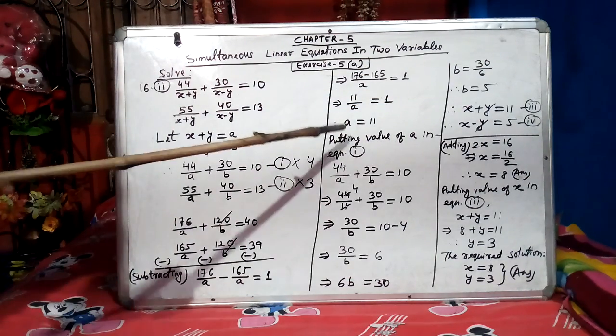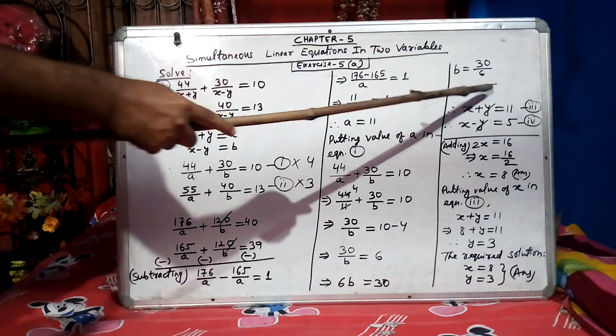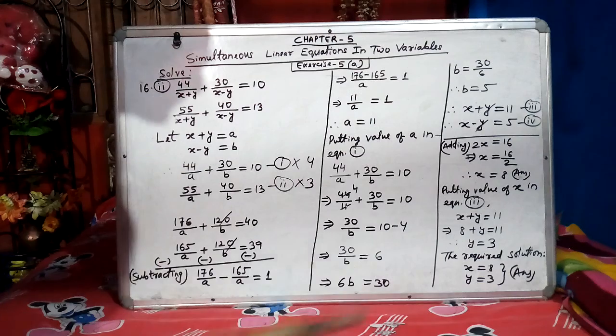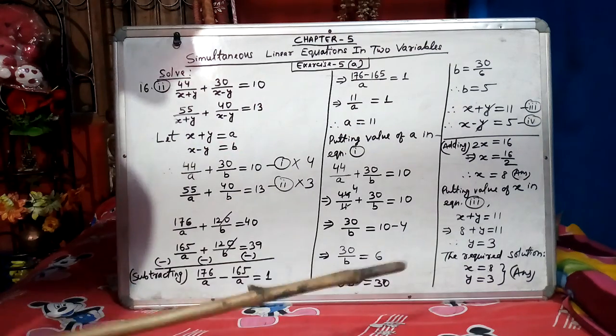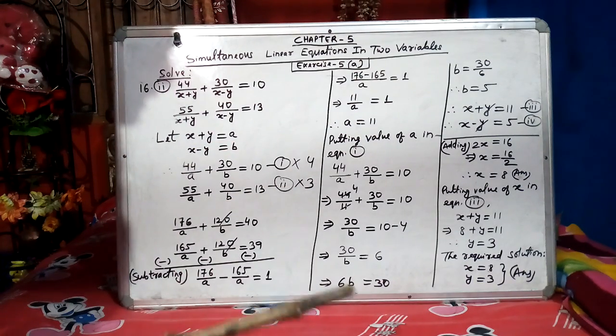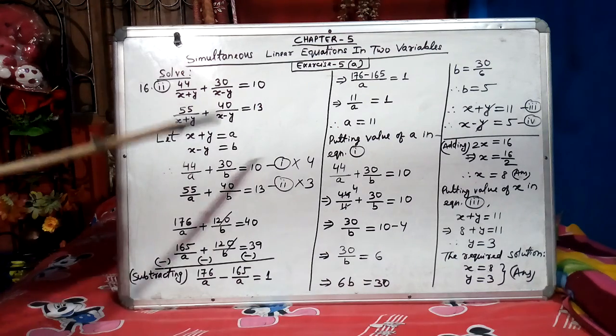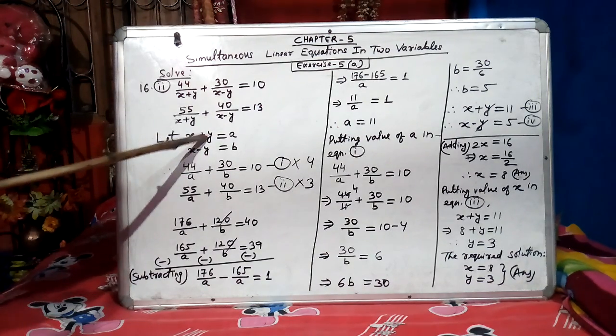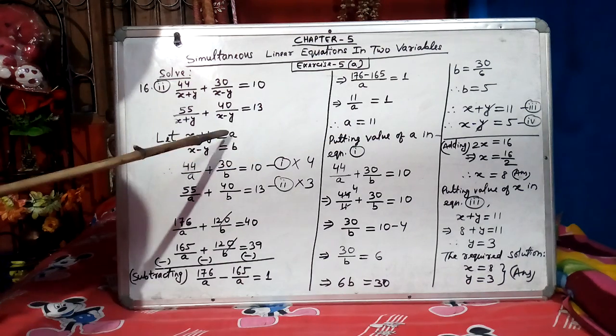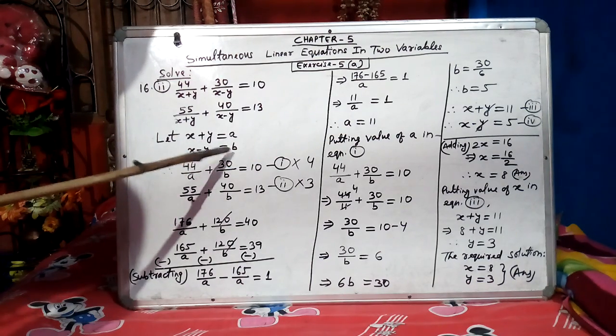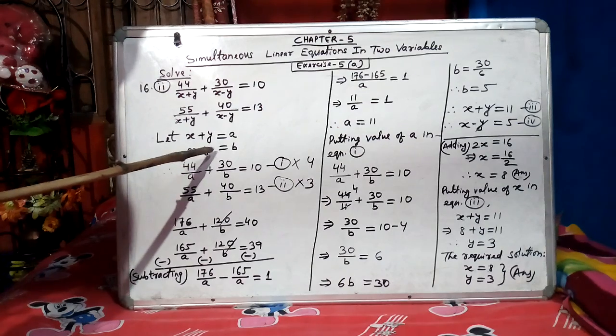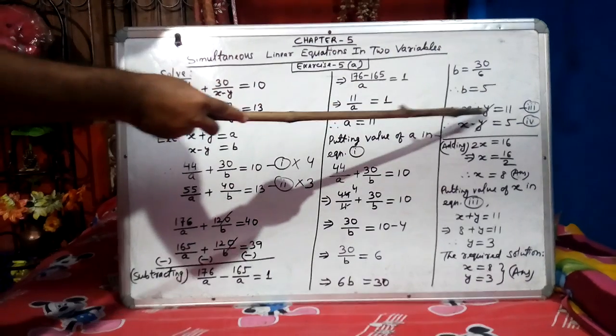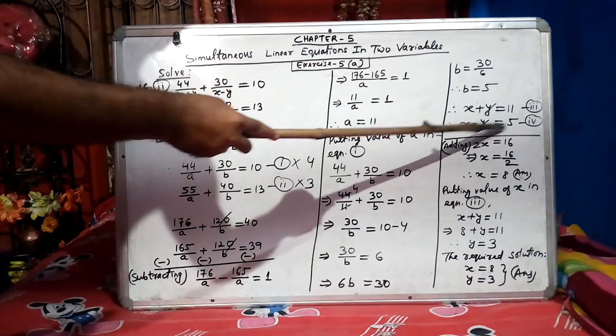Now we can say value of a is 11, value of b is 5. But we are finding the value of x and y. But we got the value of a and b. That means this is not our answer. We need to find the value of x and y. So now, what we will do? Here, x plus y equal to a. But now I can say x plus y equal to 11, because value of a is 11. x minus y equal to b. But I can say x minus y equal to 5, because value of b is 5. So same thing here I did. x plus y equal to 11, equation 3. x minus y equal to 5, equation 4.